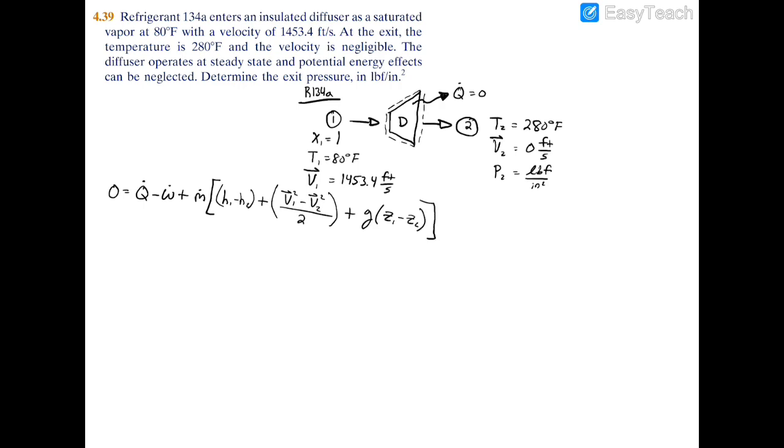Now we can make some simplifications. It's an insulated diffuser so we can cross out heat transfer. A diffuser doesn't have a shaft to generate or consume power, so we have no power. We can simplify by removing the mass flow rate if we divide both sides by it. Potential energy can be neglected. Now we're left with 0 equals H1 minus H2 plus V1 squared divided by 2.